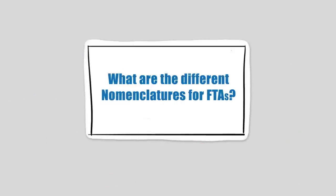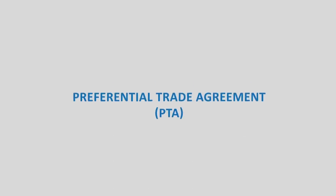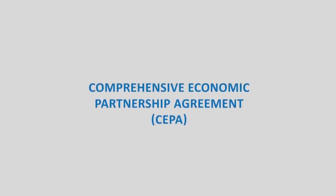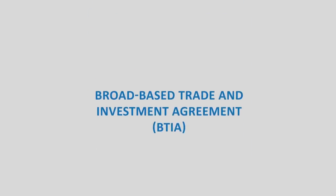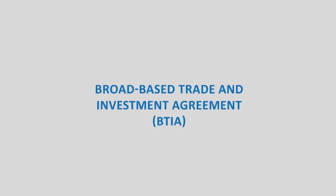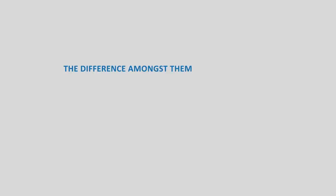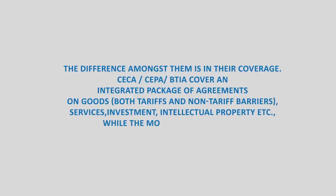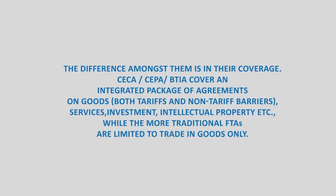What are the different nomenclatures for FTAs? FTA arrangements are known by various nomenclatures such as Preferential Trade Agreement (PTA), Free Trade Agreement (FTA), Regional Trade Agreement (RTA), Comprehensive Economic Cooperation Agreement (CECA), Comprehensive Economic Partnership Agreement (CEPA), and Broad-based Trade and Investment Agreement (BTIA). The difference amongst them is in their coverage. CECA, CEPA, and BTIA cover an integrated package of agreements on goods, services, investments and intellectual properties, while the more traditional FTAs are limited to trade in goods only.